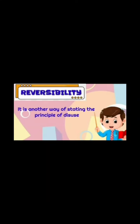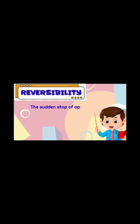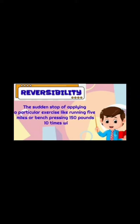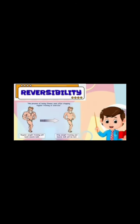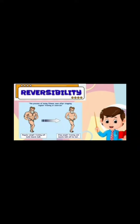Reversibility is another way of stating the principle of disuse. The sudden stop of applying a particular exercise, like running 5 miles or bench pressing 150 pounds 10 times, will cause you to lose the ability to successfully complete that exercise. For example, your strength diminishes, you become less aerobically fit, your flexibility decreases, etc.